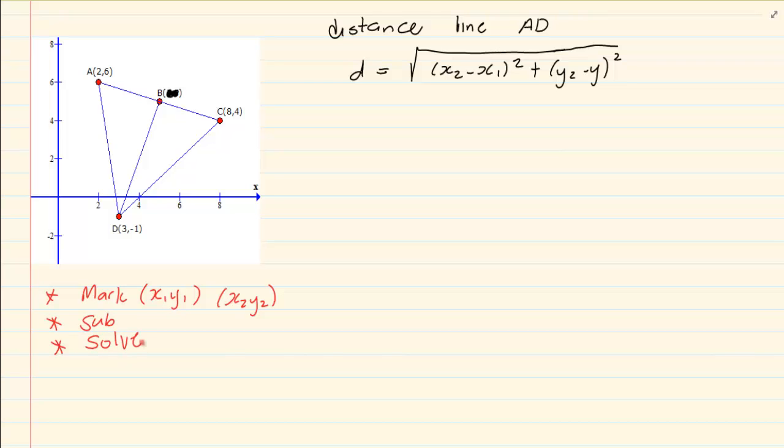If I want the distance of AD, then I am going to mark my x1, y1, my x2, y2. Remember it doesn't matter which one is x1 and which one is x2. What does matter is that you will not mix your ones and twos. When you have x1, then you must have y1. You can't have x1 and y2. Once we mark our x1, y1, x2, y2, we are going to substitute into the formula.